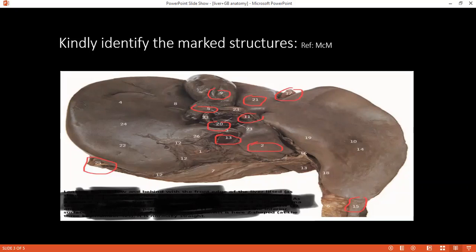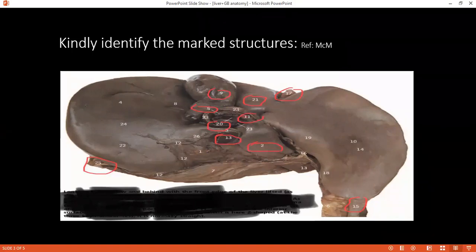Can you please tell me what are the structures which support the liver? There are ligaments, falciform ligament, right and left triangular ligament, upper and lower coronary ligament and lesser omentum.